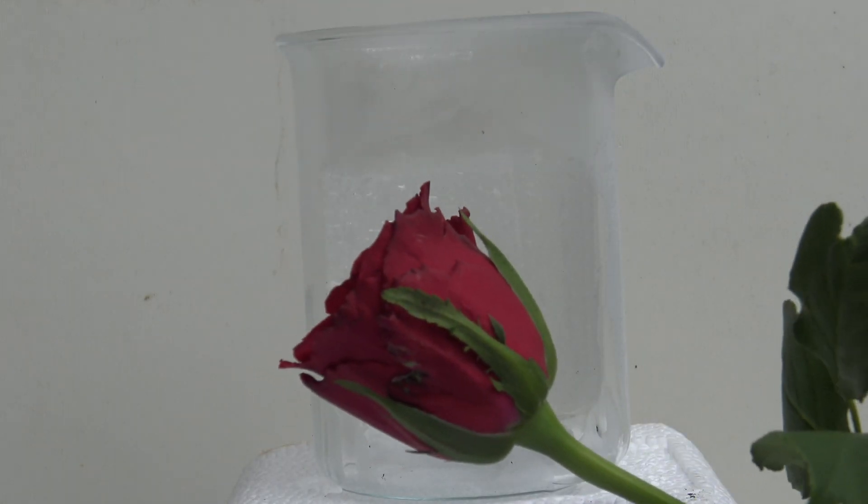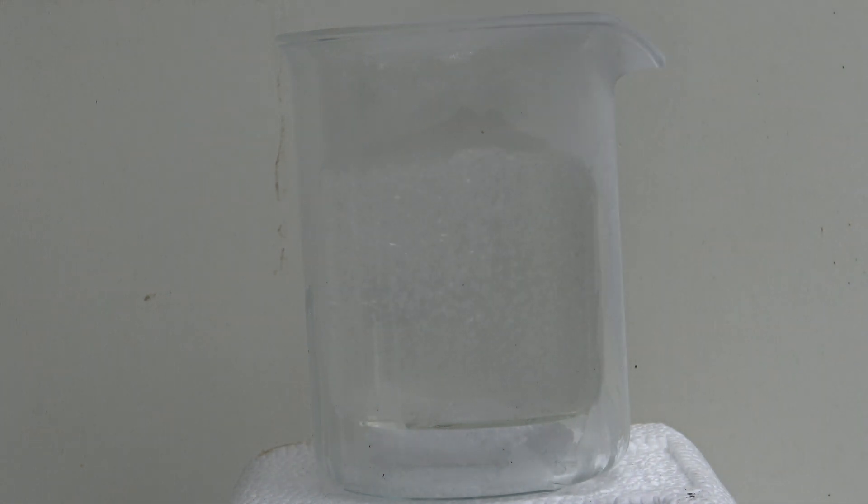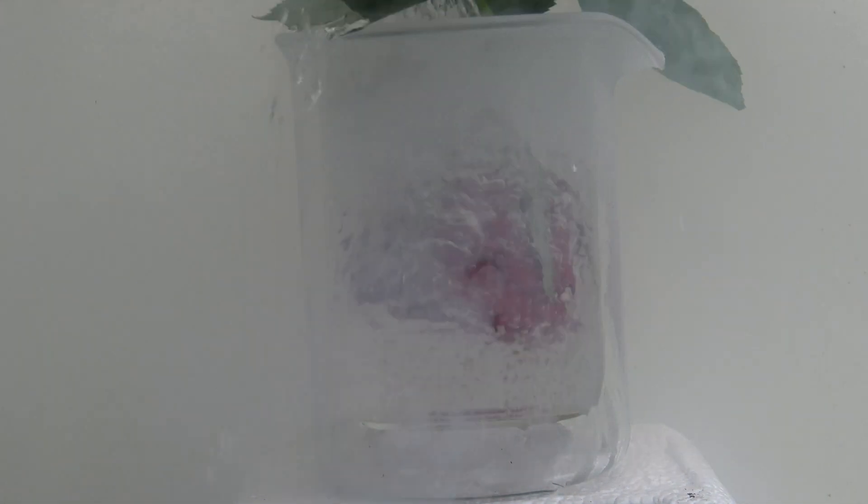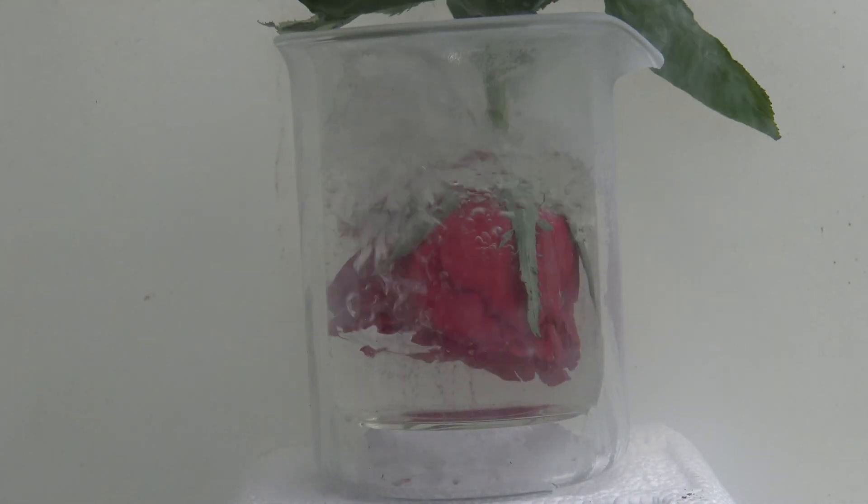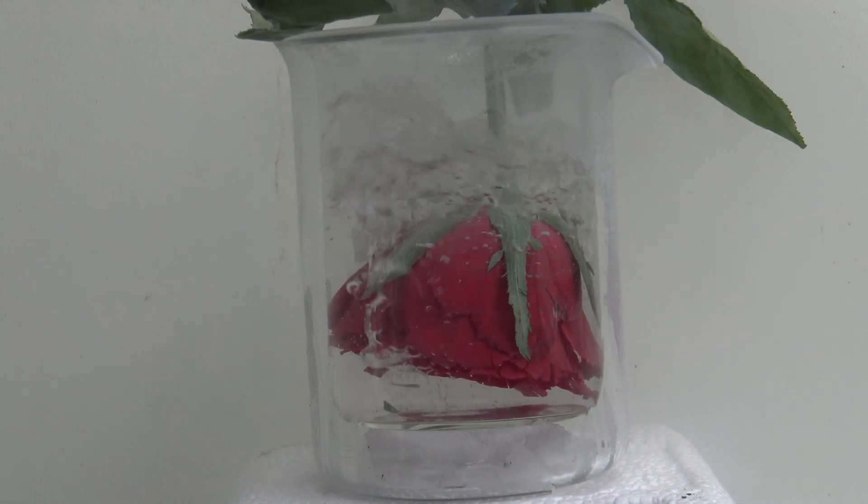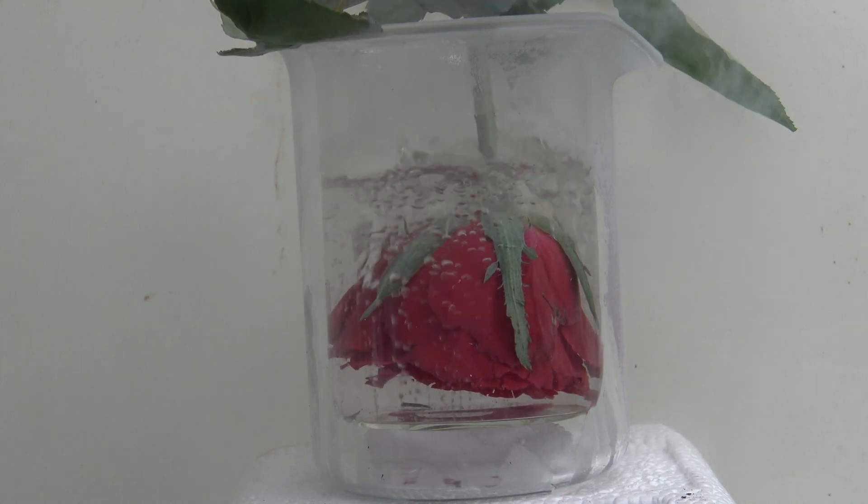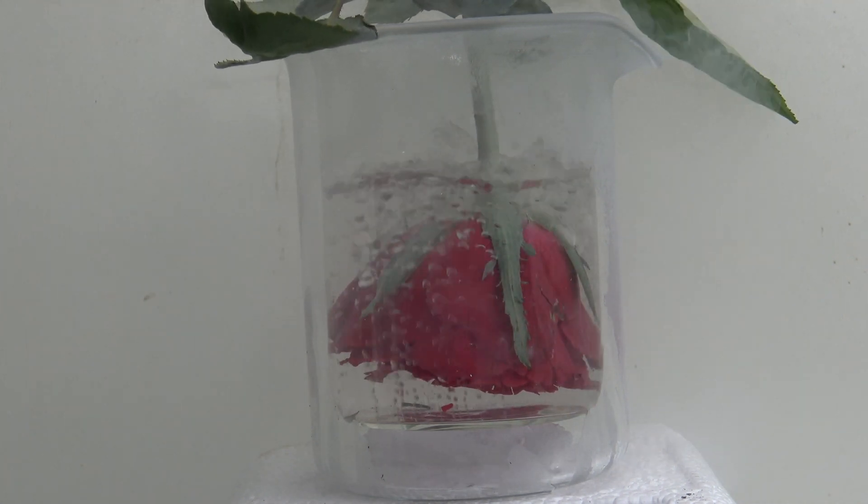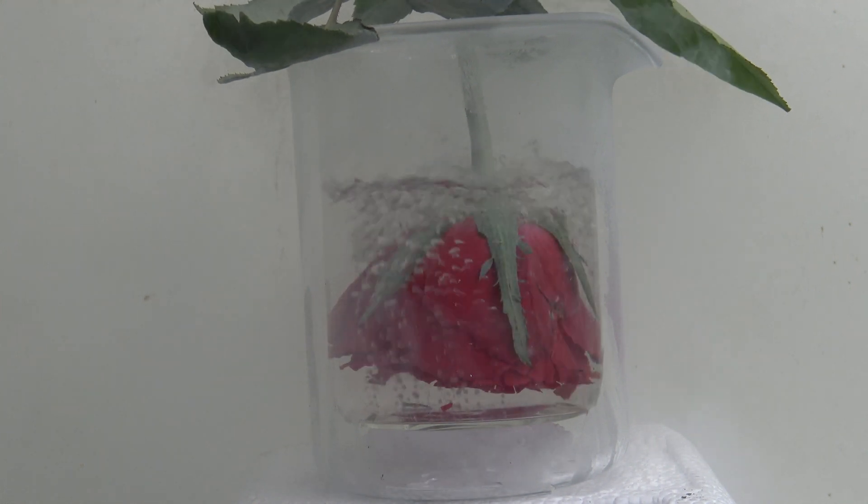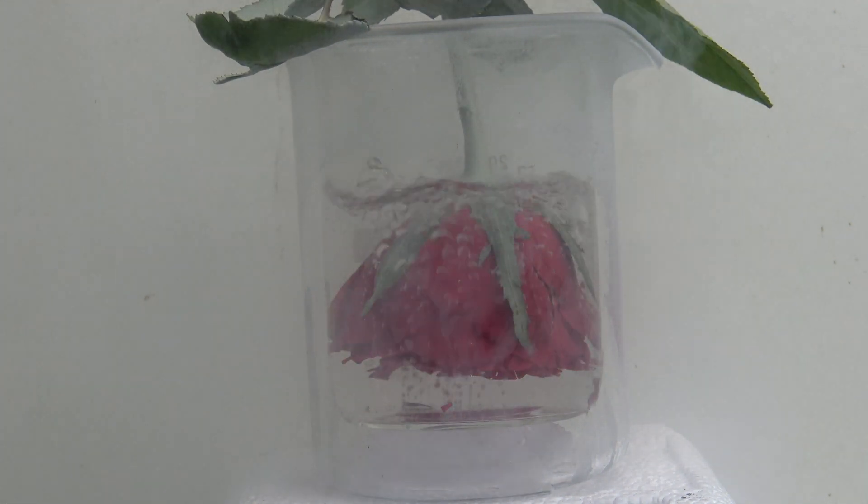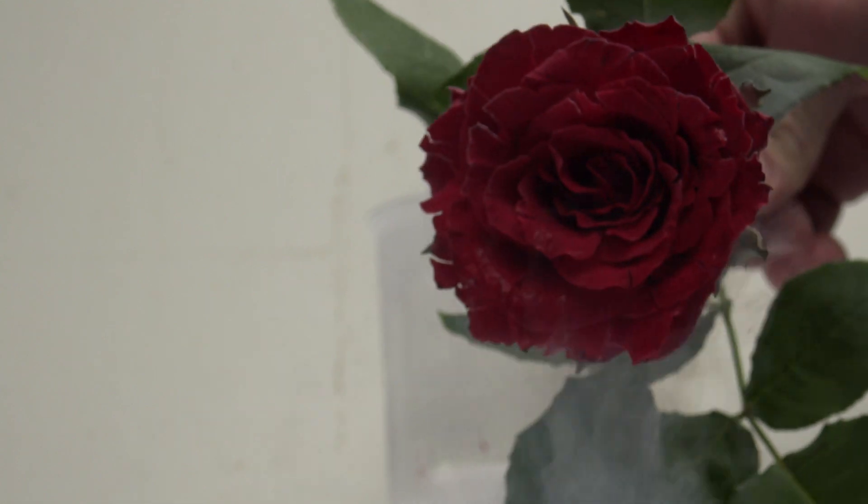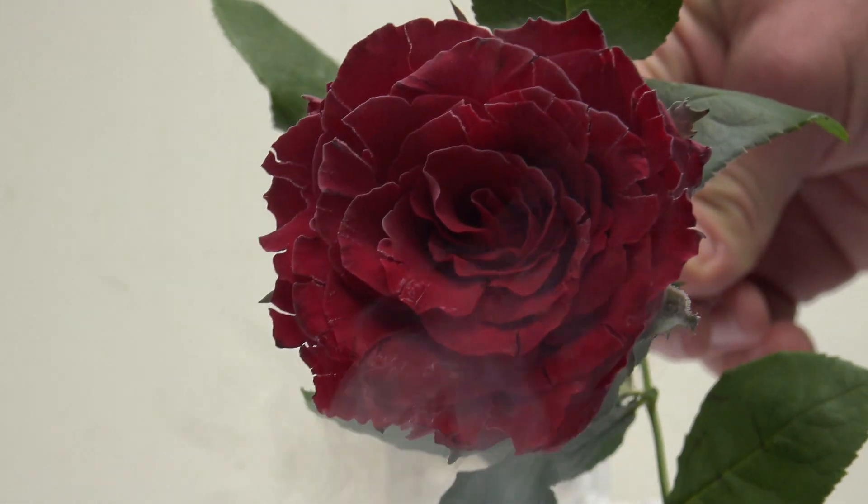A usual demonstration is putting a rose into liquid nitrogen. It doesn't take long until the rose is frozen completely. The otherwise soft petals then behave like glass.